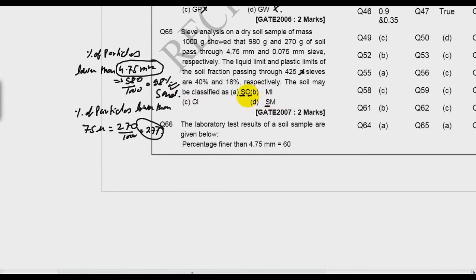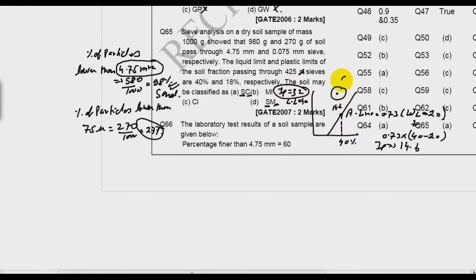It may be clay or silt, so what else is given? Liquid limit and plastic limit. So check Ip. Ip is 32 and liquid limit is 40. On A-line, the equation is 0.73 times liquid limit minus 20. Put liquid limit as 40: 14.6. On 40 percent liquid limit the Ip on the A-line is 14.6 and my Ip is 32, so I am above A-line, so it is clay. The name of the soil will be sandy clay or SC.